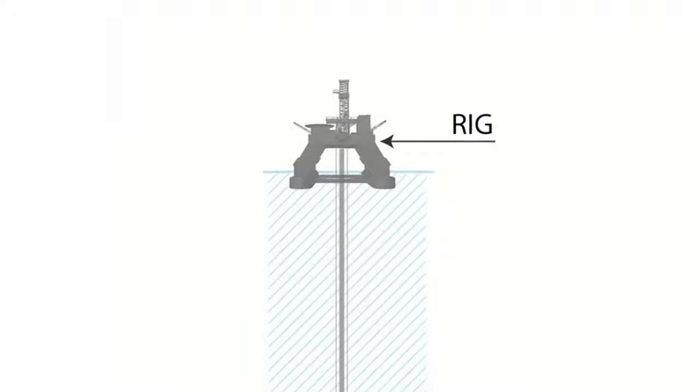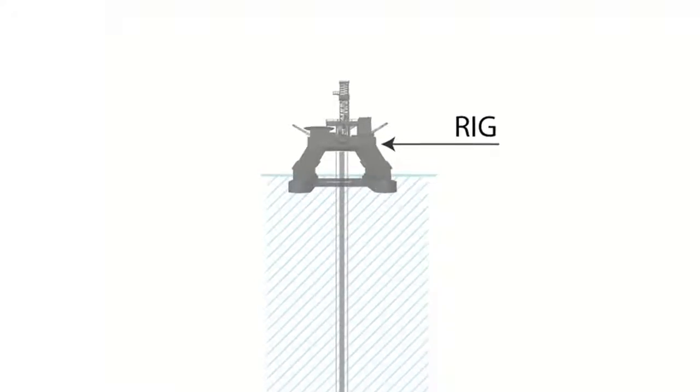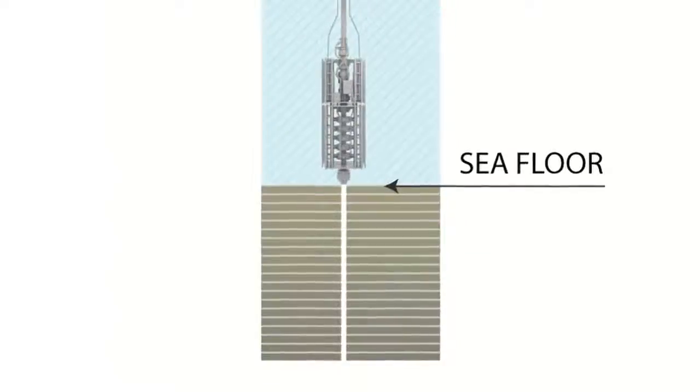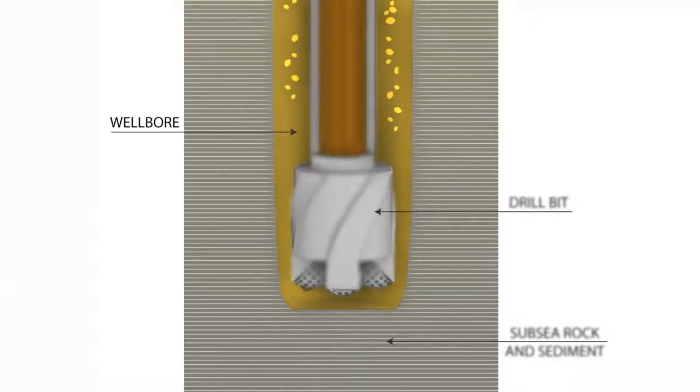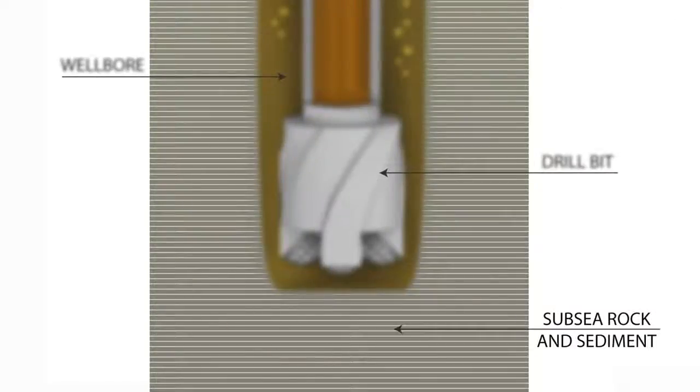Drilling an offshore well involves creating a pathway between the drilling rig and oil and gas reservoirs trapped beneath the sea floor. A deep hole, or wellbore, is drilled through layers of subsea rock and sediment.